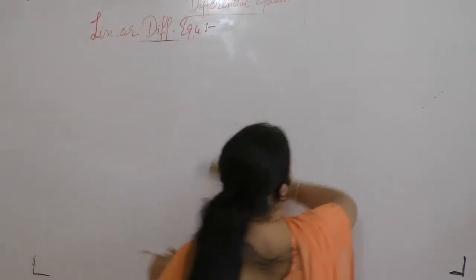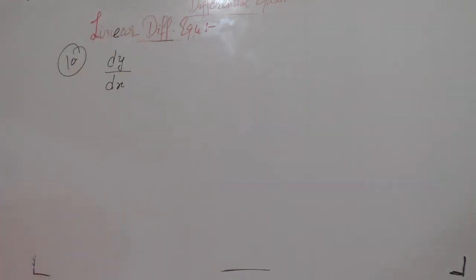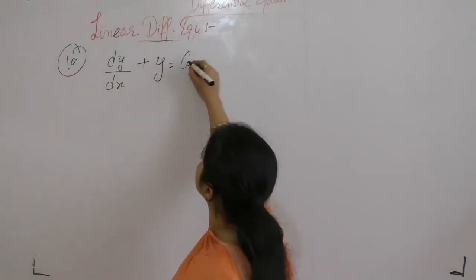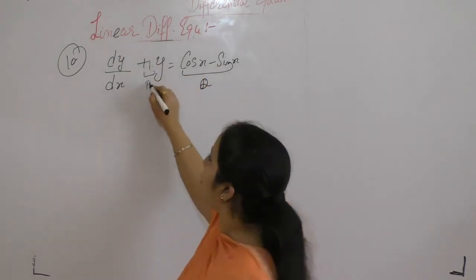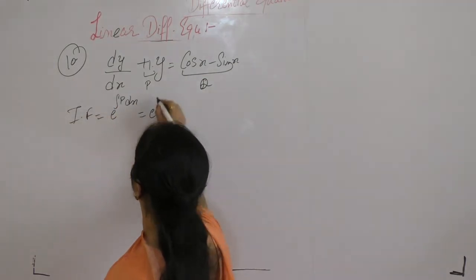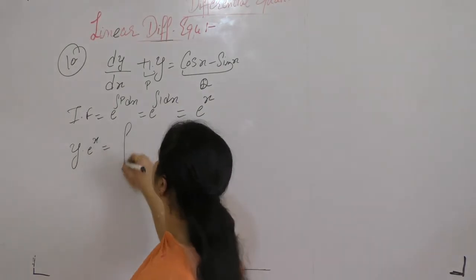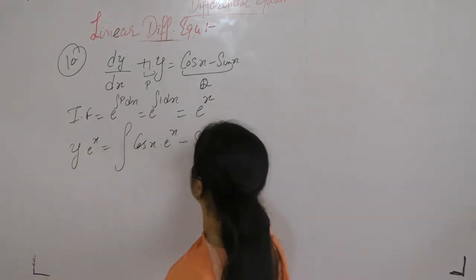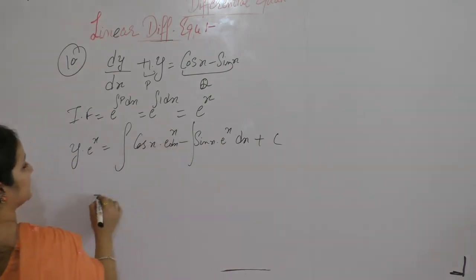Now the next one is question number 10. Solve the differential equation dy/dx + y = cos(x) − sin(x). We have q = cos(x) − sin(x) and p = 1. The integrating factor is e^(∫p dx); since p = 1, the integral of 1 is x, so the integrating factor is e^x. Now y · e^x equals integral of q · e^x dx plus c.